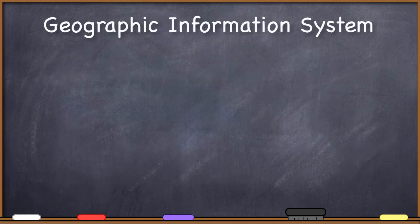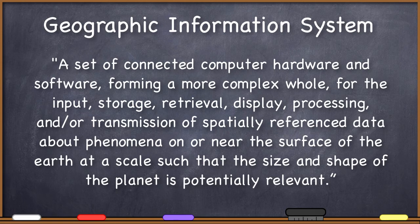So if we put all of this together, we get a set of connected computer hardware and software forming a more complex whole for the input, storage, retrieval, display, processing, and/or transmission of spatially referenced data about phenomena at the surface or near the surface of the Earth at a scale that the size and shape of the planet is potentially relevant. This is a much better definition than simply saying that a geographic information system is an information system for geographic information, even given the bit of vagueness about the size of the area being considered or about what exactly it means to be near the surface of the Earth.